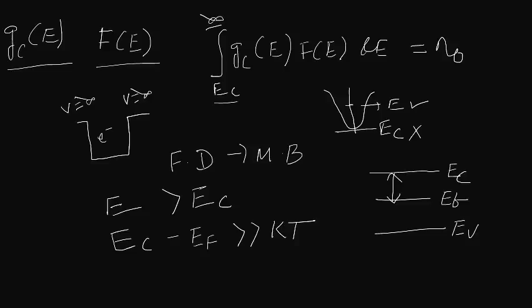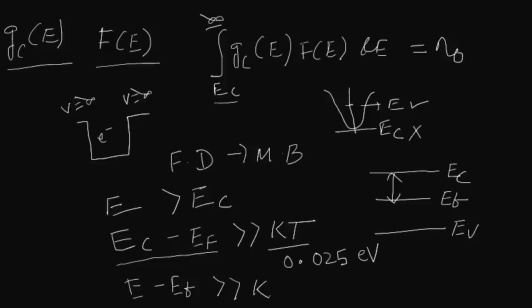At room temperature T = 300 K, with k being the Boltzmann constant, the value of kT comes to around 0.025 electron volts, which is very small. So we can use the approximation that ec minus ef is much larger than kT. Since e is greater than ec, we can also write that e minus ef will be larger than kT.